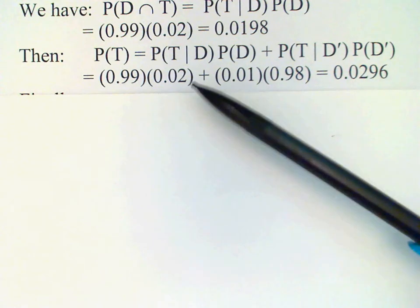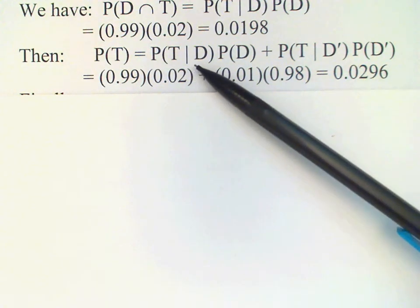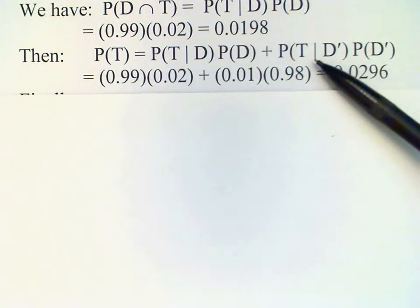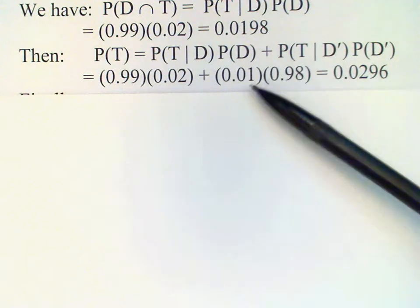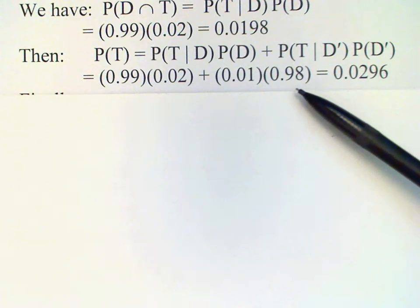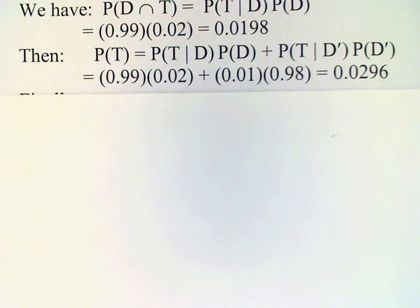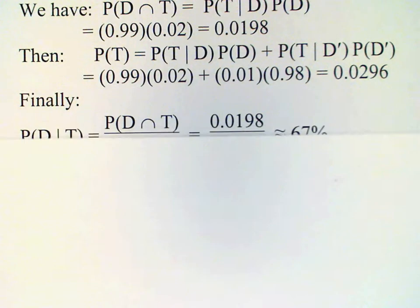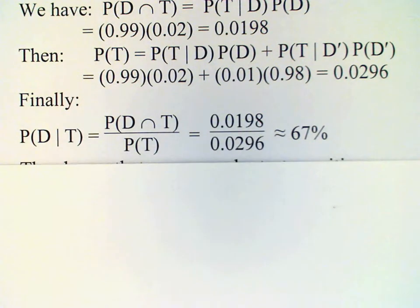For the false positive, we're assuming that's 1%, and the probability that a randomly chosen person does not use the drug is 98% — since 2% use the drug, 98% do not. So we find the probability of a positive test to be 0.0296, or nearly 3%.